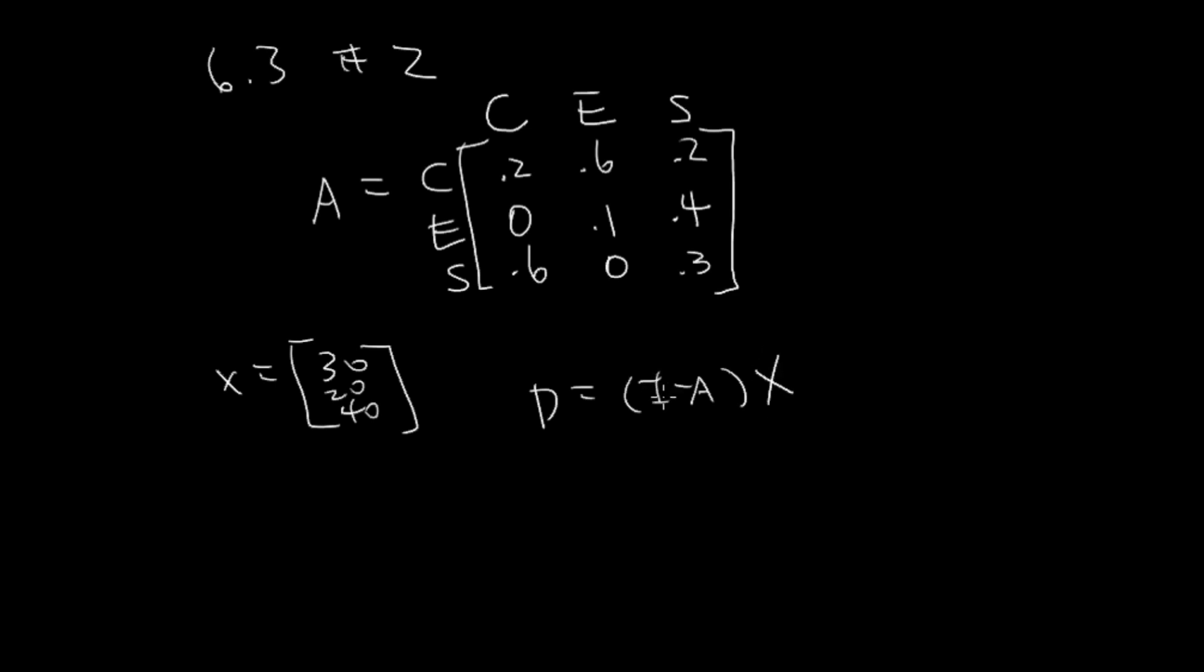I is one zero zero, zero one zero, zero zero one. Take that minus our A: 0.2, 0.6, 0.2; 0, 0.1, 0.4; 0.6, 0, 0.3.